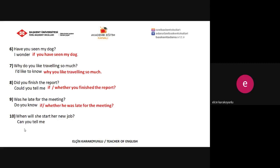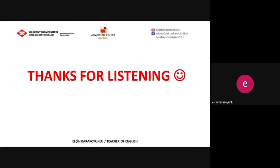The last one: 'When will she start her new job?' → 'Can you tell me when she will start her new job?' So as you see, these are the direct questions and these are the indirect questions. Don't forget: for indirect questions, first use a suitable phrase, then if we have a WH question word we use it, followed by the subject and the suitable verb form according to the tense. If we don't have any WH question words, we use 'if' or 'whether.' Thanks for listening. That's all for today.